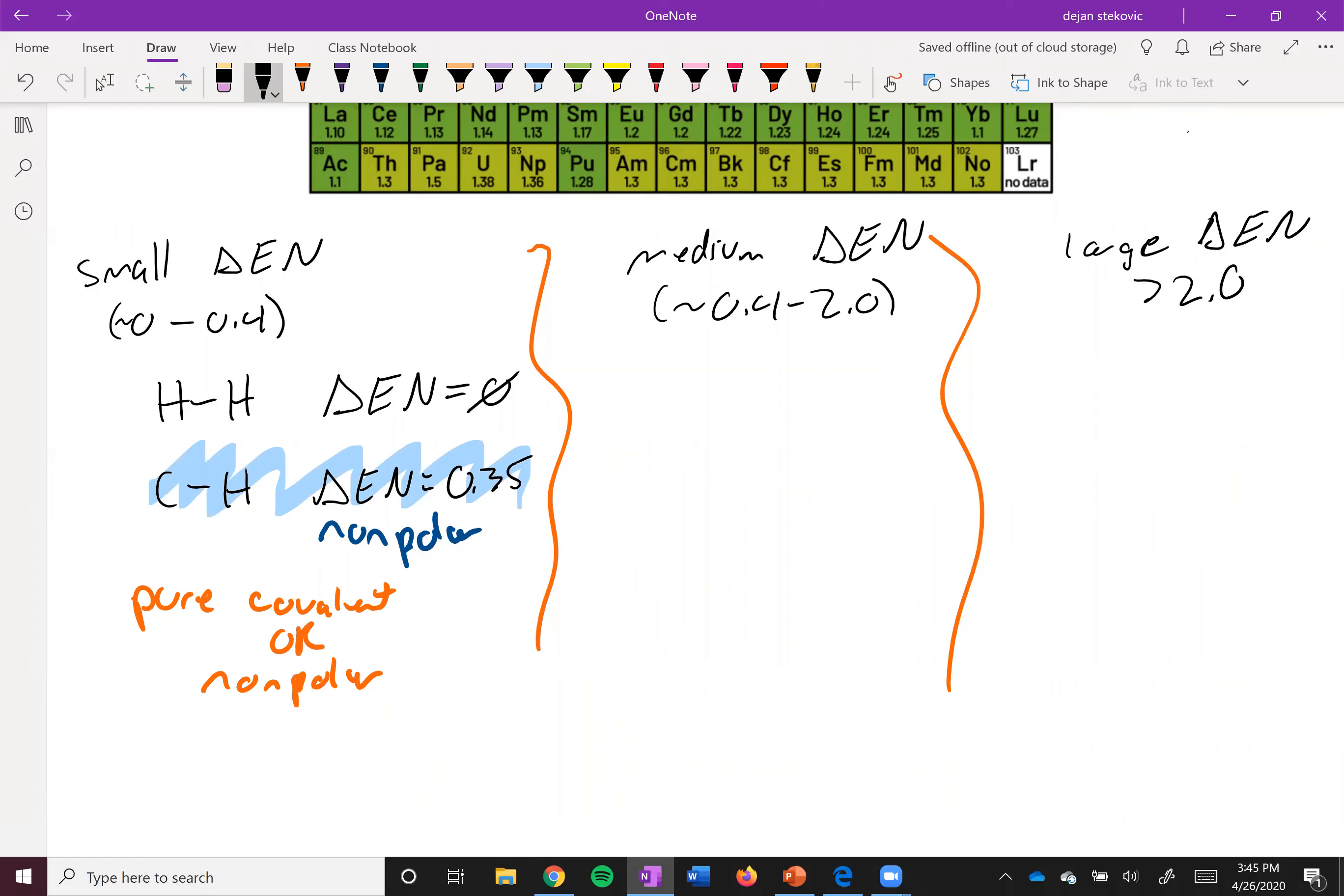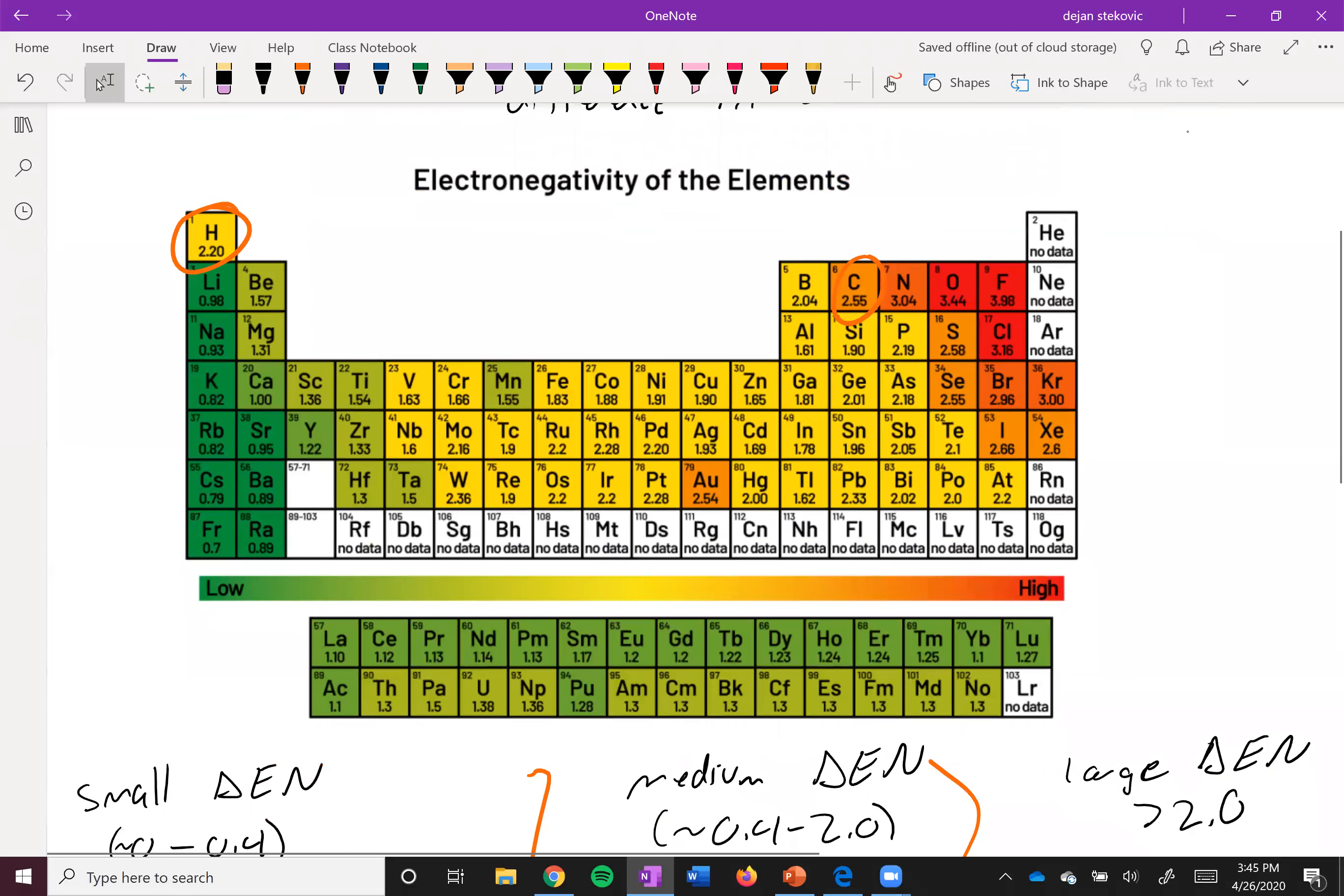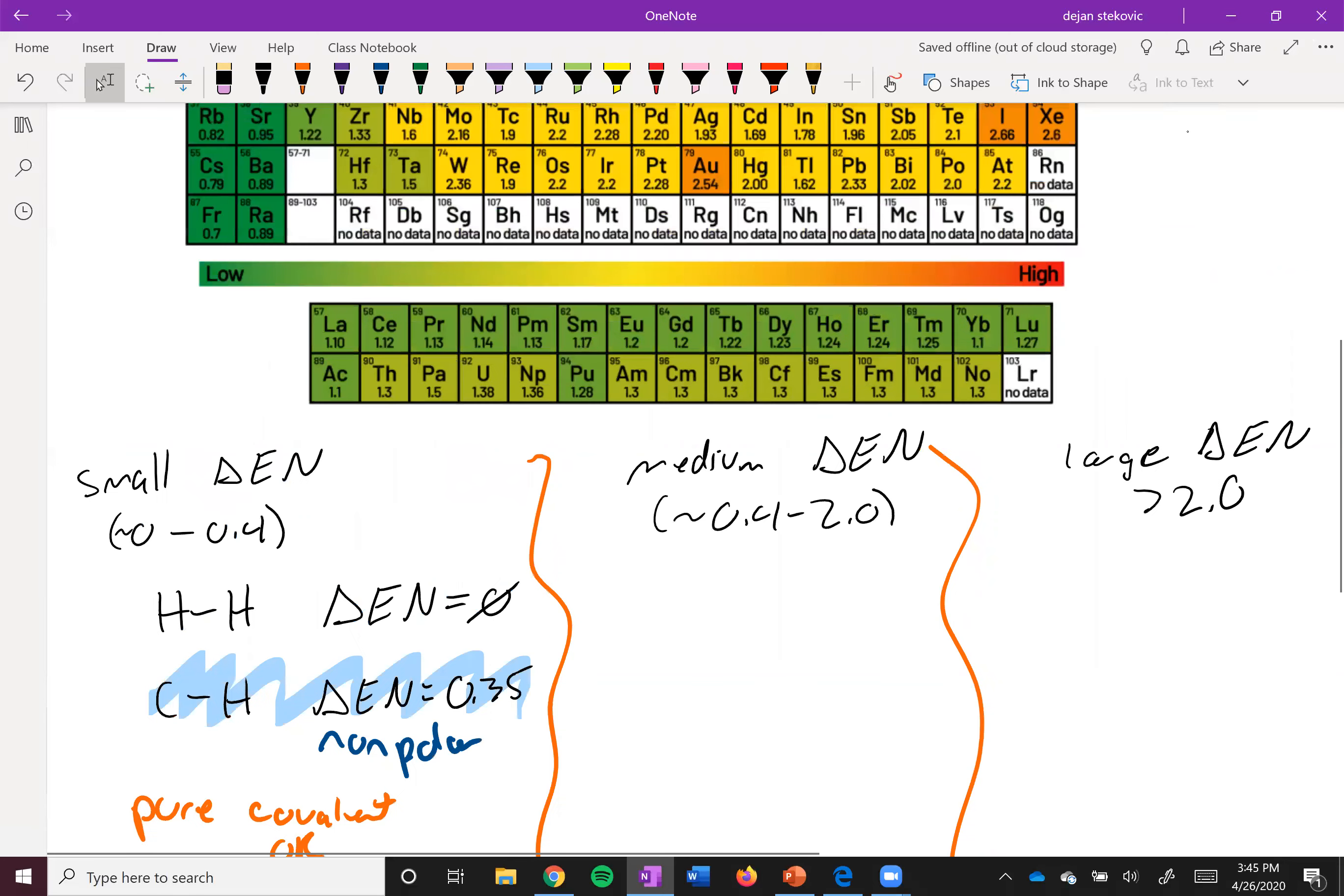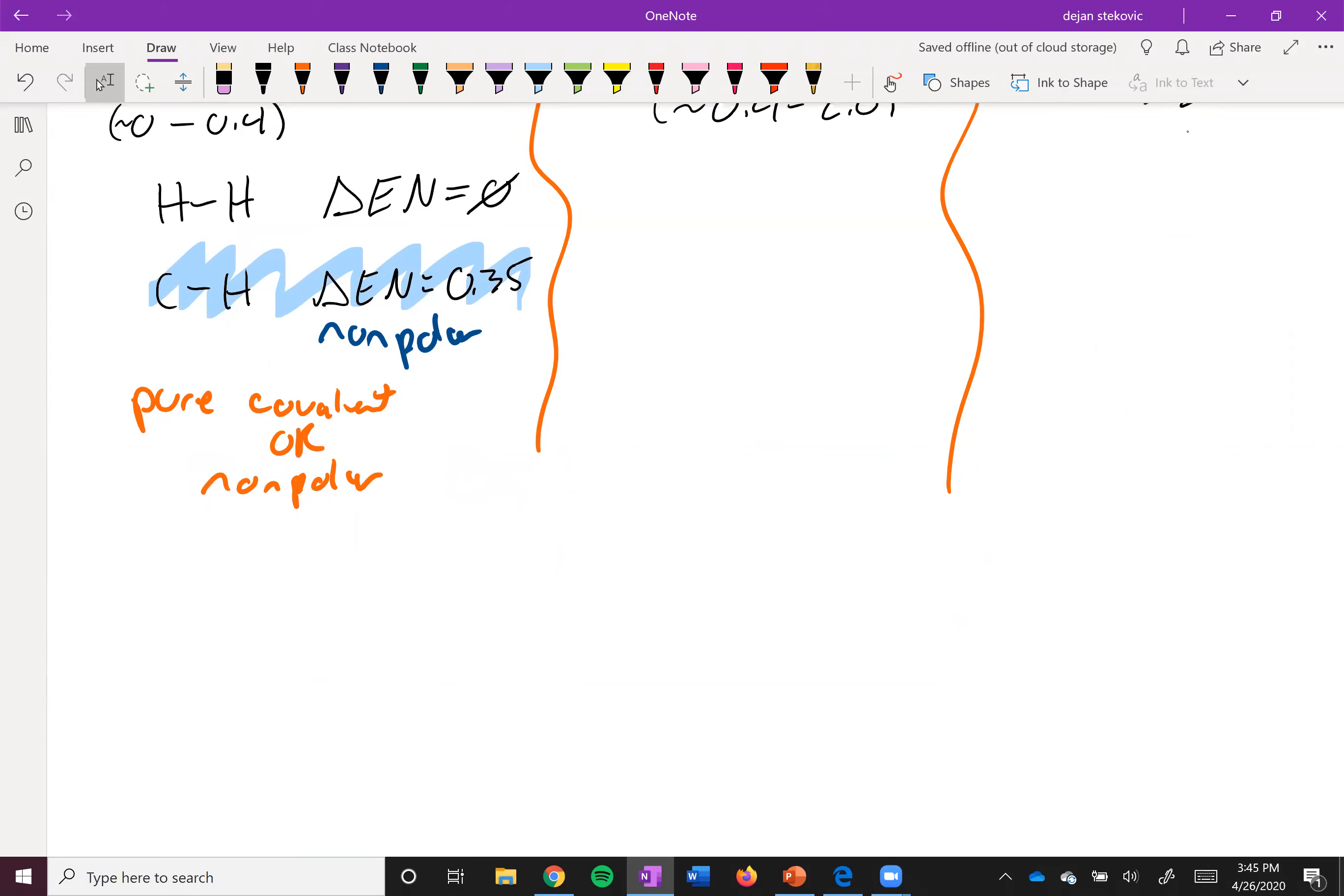And think about the trends in electronegativity. In order for things to have a small difference in electronegativity, they should be close to each other on the periodic table other than hydrogen. Hydrogen is kind of a weirdo. So kind of close together on the periodic table. And you shouldn't need an electronegativity table to tell whether the bond is polar or nonpolar. You should get a good feel for it.